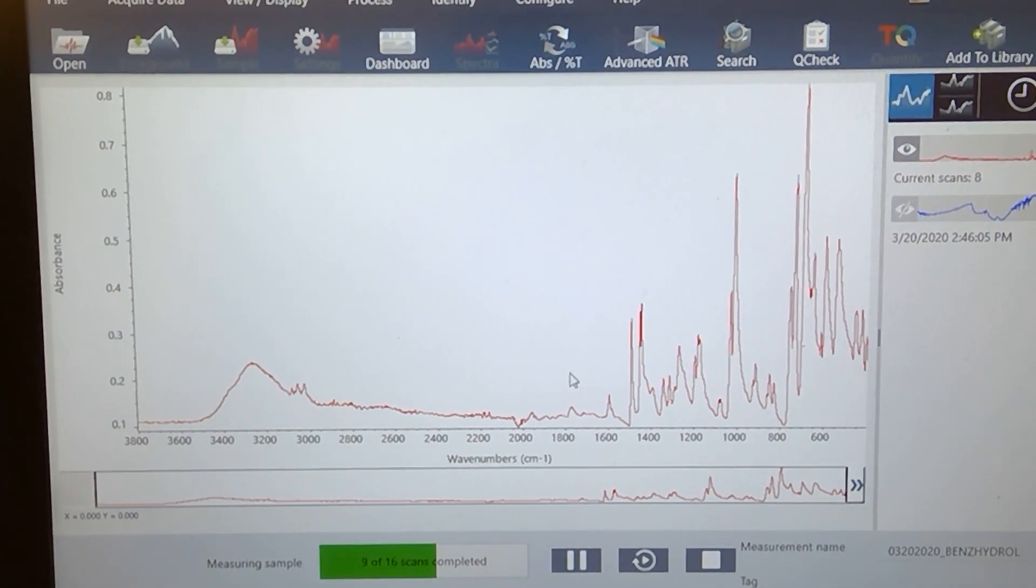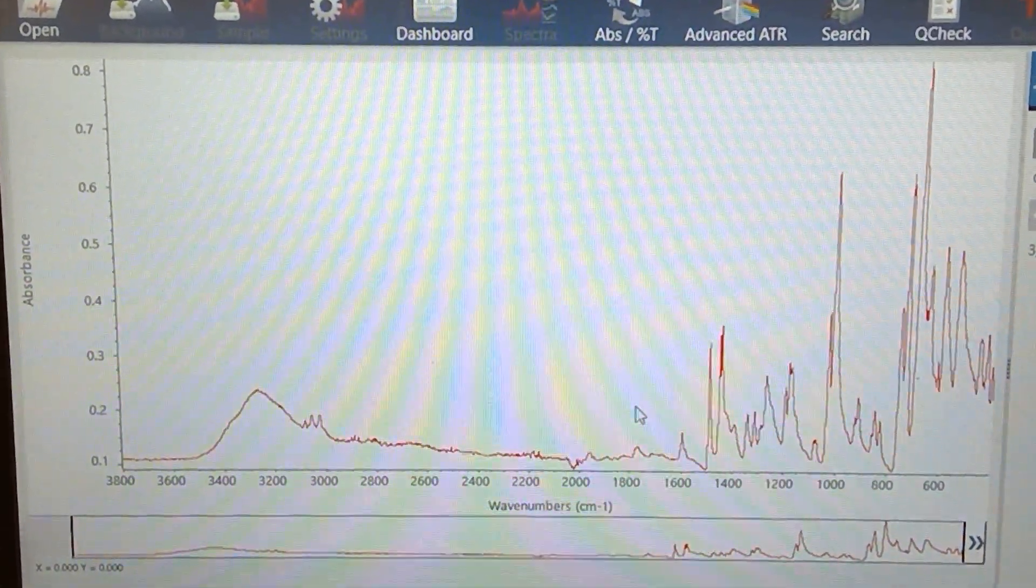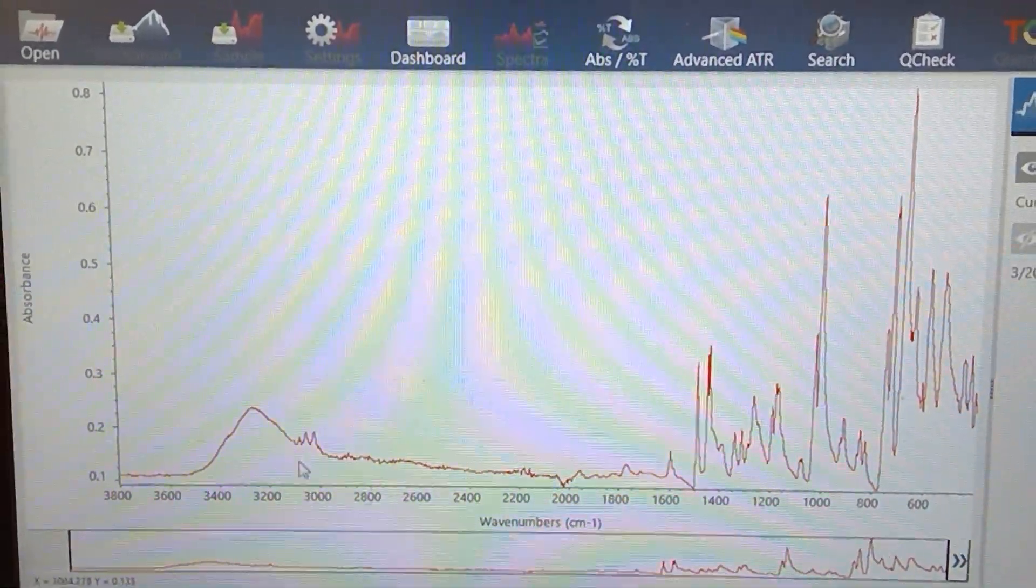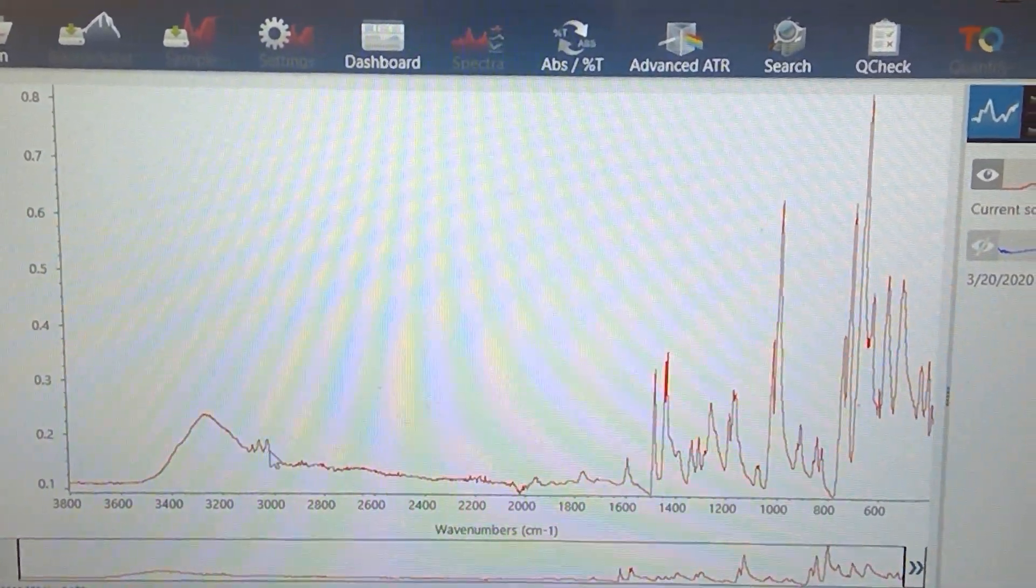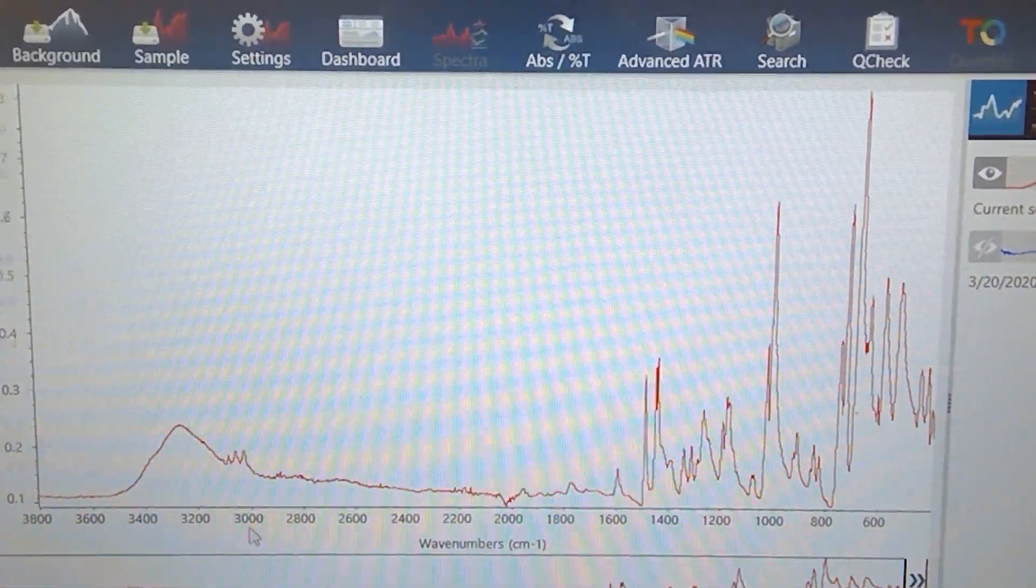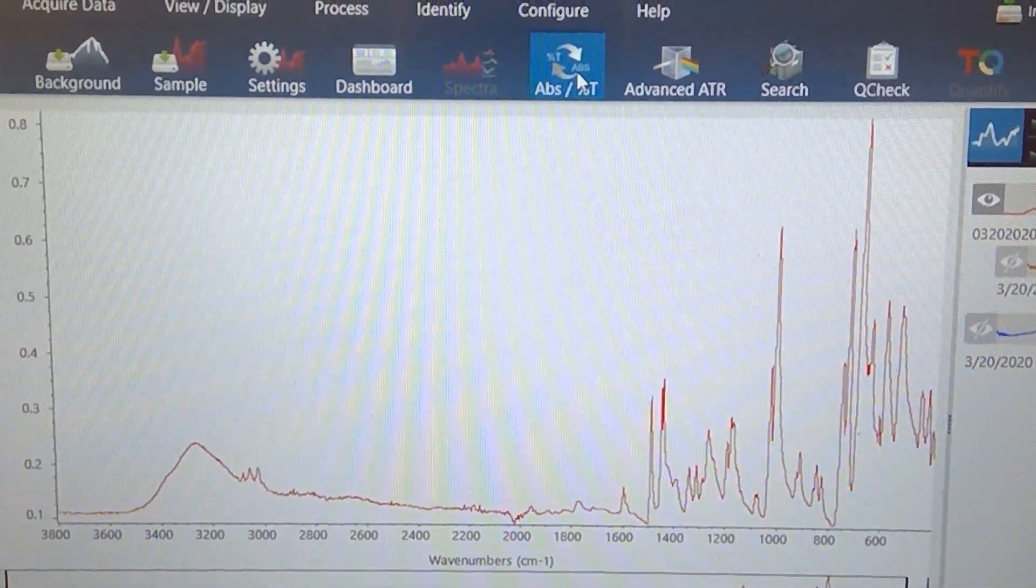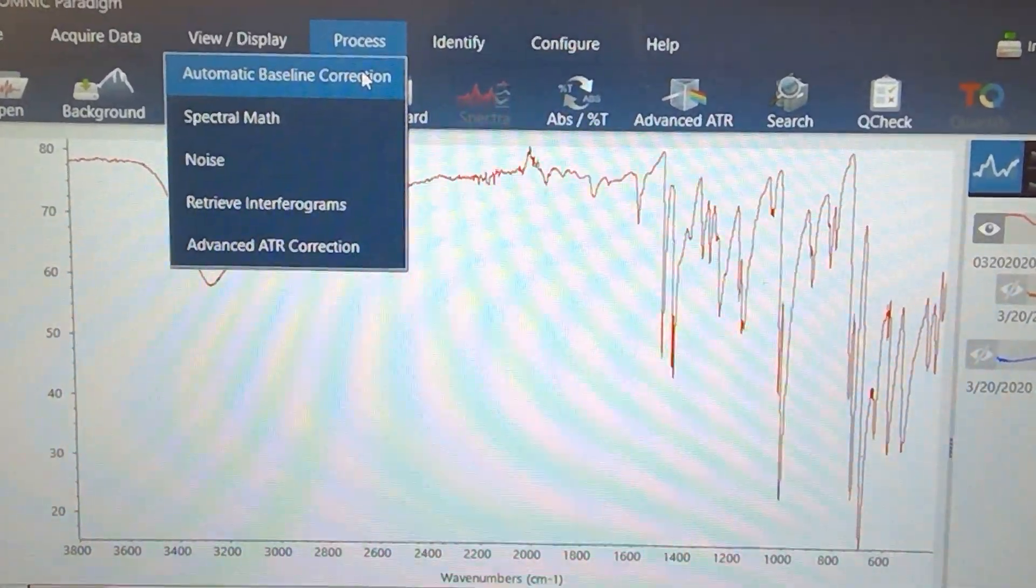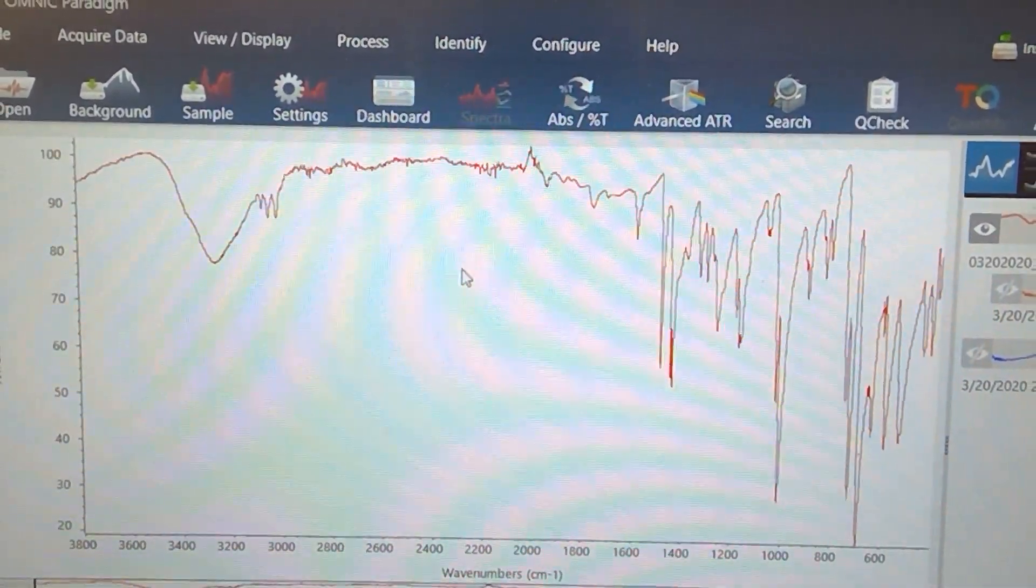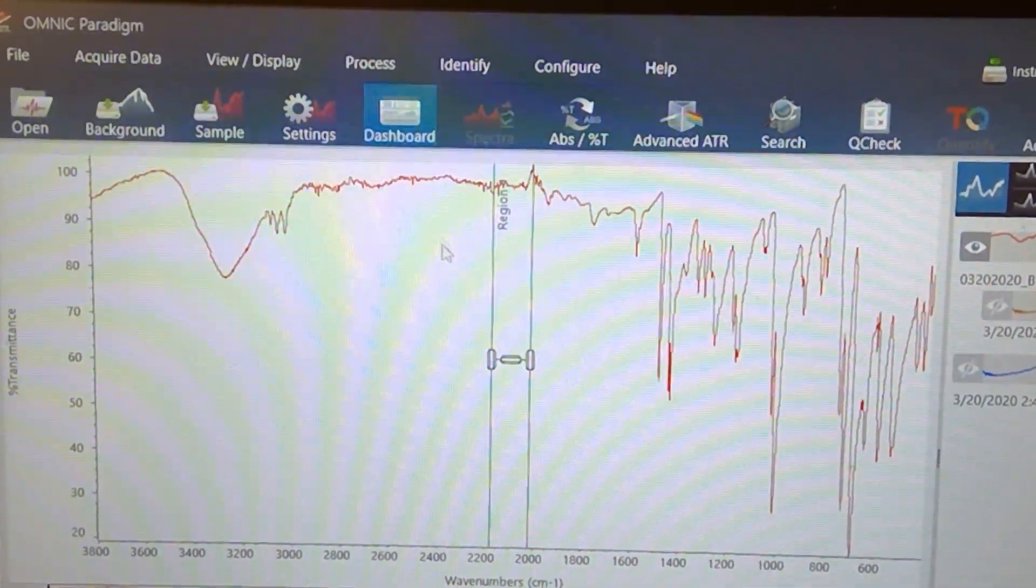Nice, we see an alcohol peak starting to grow pretty significant, so that would be right here in this area. This looks like hydrogens that would be connecting to a benzene ring. Let's go ahead and flip this to the right direction, wonderful, and I'm going to ask it to correct my baseline.